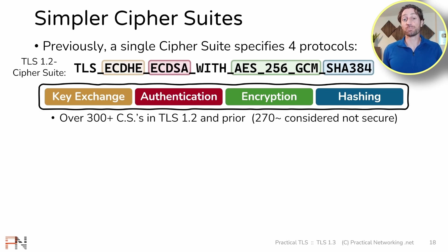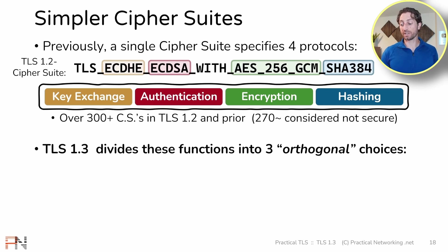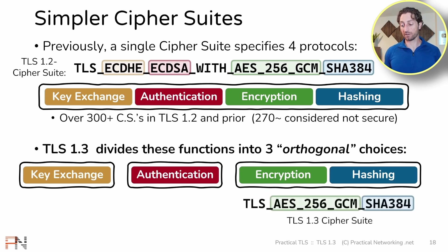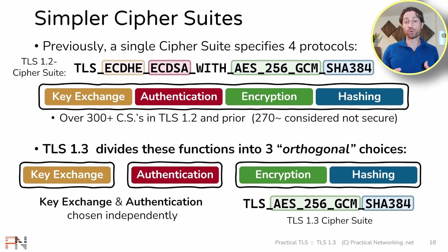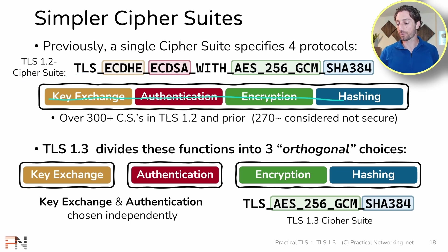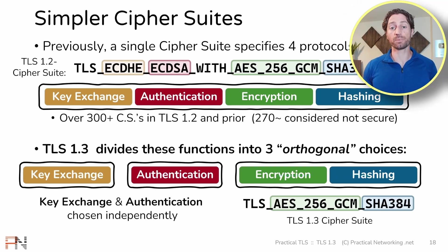What TLS 1.3 does is it simplifies the choices by breaking them into three orthogonal choices: one choice for key exchange, another independent choice for authentication, and another independent choice for encryption and hashing. A TLS 1.3 cipher suite only specifies a symmetric encryption protocol and a hashing algorithm. You still need to do a key exchange and authentication, but those choices are made independent from the choice for encryption and hashing — that's what orthogonal means. The choice you use for one doesn't affect the choice for the others. The benefit is you no longer need a unique cipher suite for every combination of four security services, only for combinations of two.